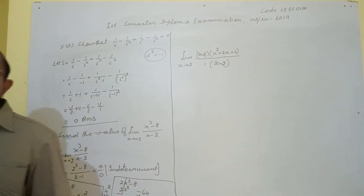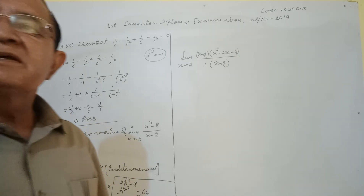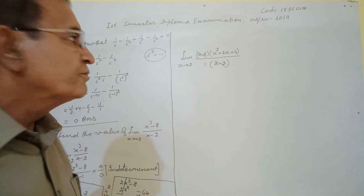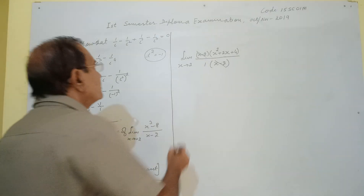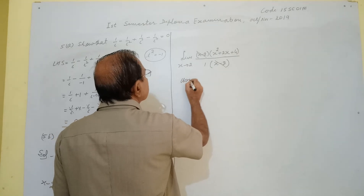After cancelling (x - 2), put the value of x as 2 using the limit.